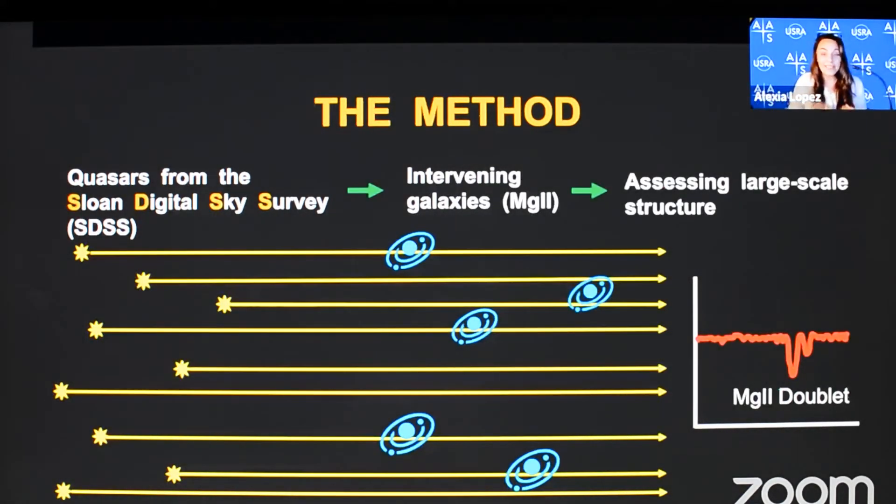The method we use is intervening magnesium-2 absorption systems in the spectra of quasars, which sounds quite fancy and complicated, but I'll break it down. The Sloan Digital Sky Survey has mapped and measured almost three-quarters of a million quasars, which are really bright galaxy cores, over one-third of the sky. The light travels across the universe and passes through the gas around galaxies. Some of the light from the quasar is absorbed by this gas, and it leaves a signature feature like a fingerprint in the spectrum of the quasar.